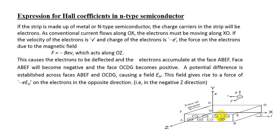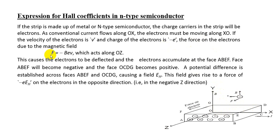Now, let us consider a semiconductor strip which is placed on the coordinate axis. Since this is an n-type semiconductor, the charge carriers are electrons. Current is flowing along the x-axis, so the electrons must be moving along negative x. The velocity direction is shown here, and the charge of the electron is minus e. The force on the electrons due to the magnetic field is F = minus e·V, which acts along the z-axis.